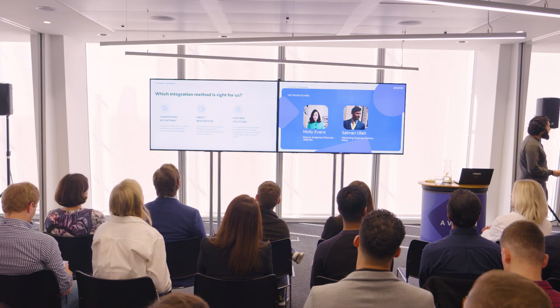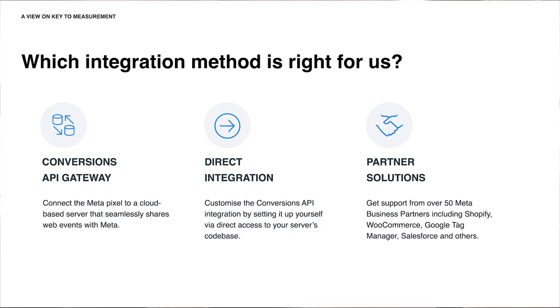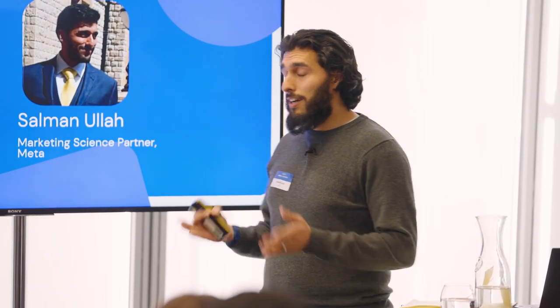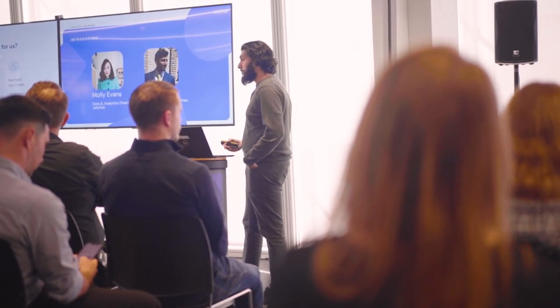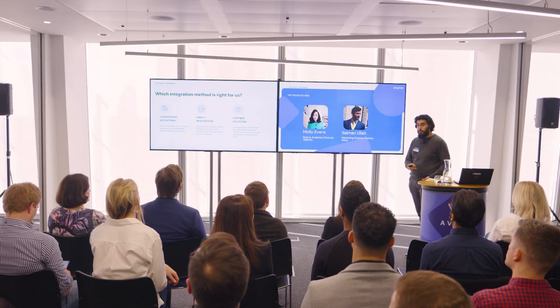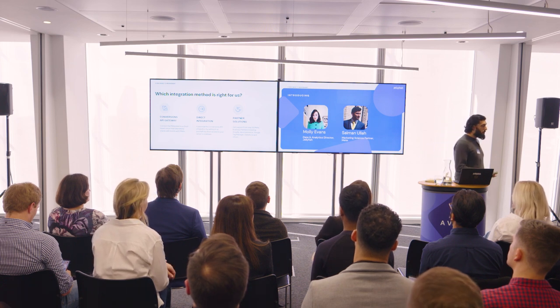Now let's talk about what the implementation routes are for Conversions API. There are three main buckets. First is the Conversions API gateway, where Meta has developed a solution for implementing a server-to-server integration using AWS — meant to replicate the Meta Pixel. Second is direct integration, where you can fully customise your Conversions API server-to-server integration to your business needs. And third, the partner solution, where you can get support from over 50 Meta business partners such as WooCommerce, Shopify, and Google Tag Manager.